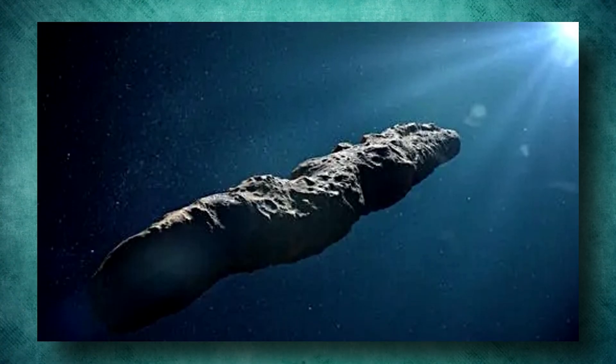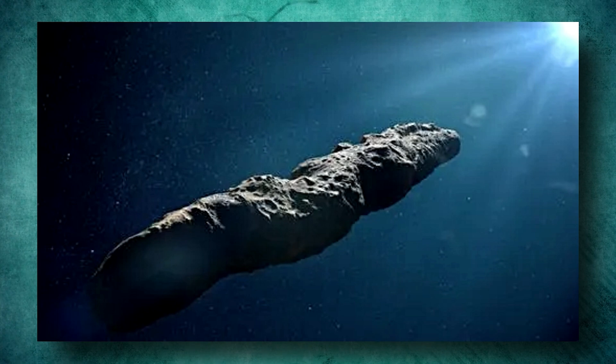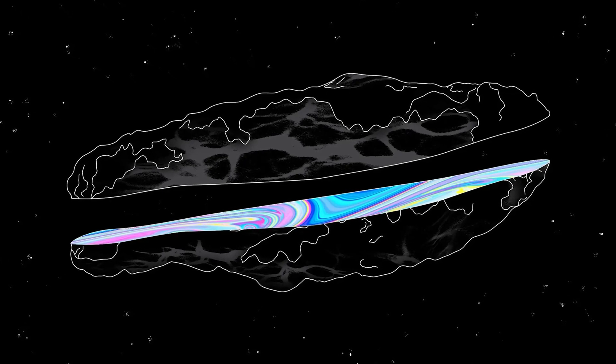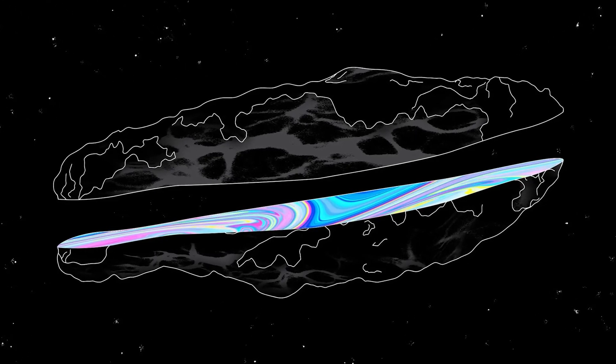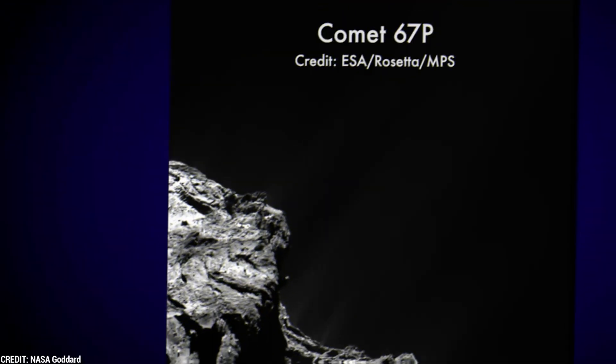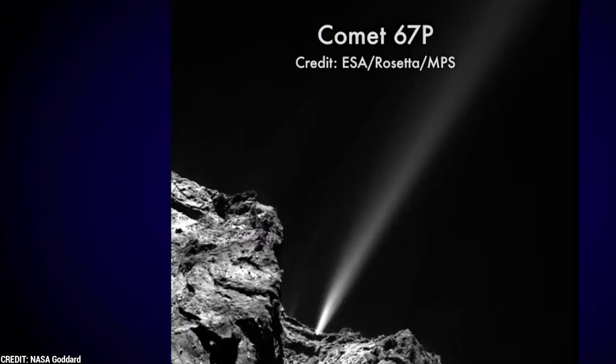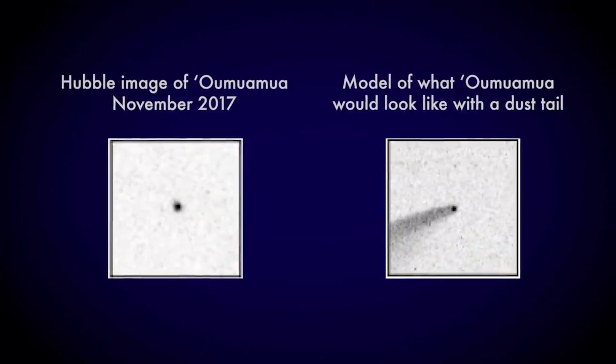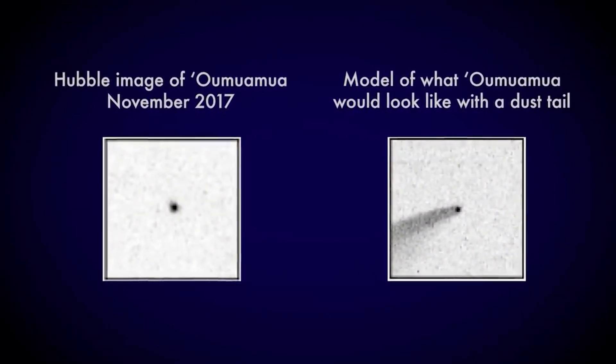Interestingly, Oumuamua is about ten times more reflective than comets from our solar system, possibly due to surface dust being blown off by the outgassing process, revealing shiny ice beneath. The idea of Oumuamua being propelled by jet-driven motion has intrigued astronomers and researchers at SETI who have searched for any potential technological signals from the object. However, no response has been detected despite two dedicated campaigns.